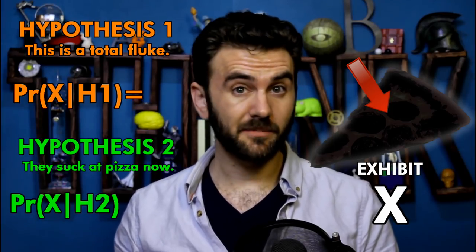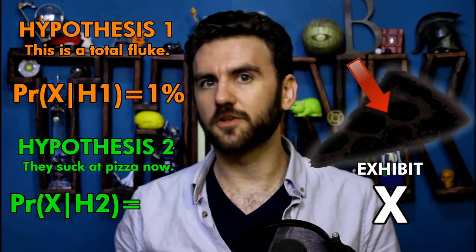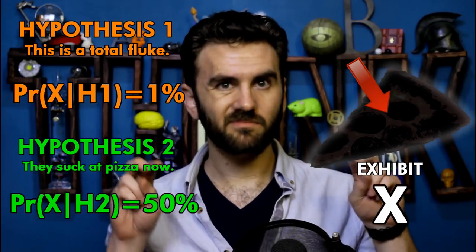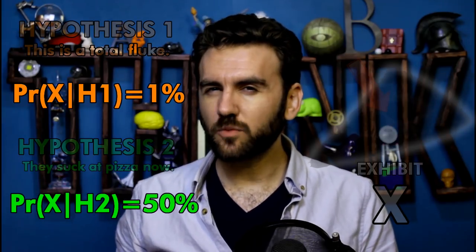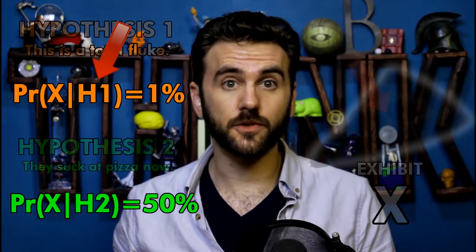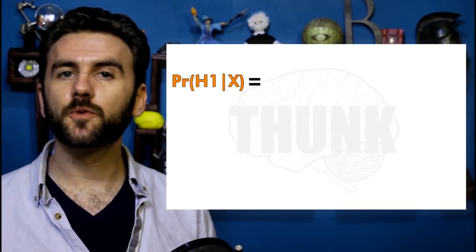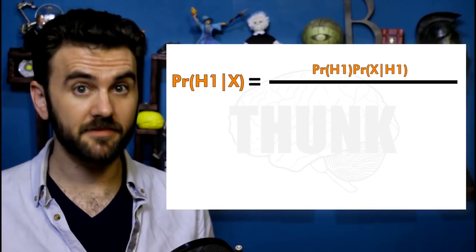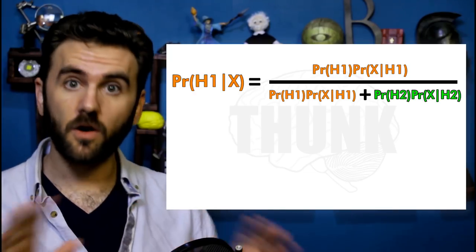If this place was actually amazing, this kind of mistake should only be a 1 in 100 thing. If they finally lost their best chef or something, it could be a 50-50 chance whether you're going to get a good meal or not. These are called conditional probabilities — basically, how likely would this observation be if this hypothesis were true? Finally, we're going to use Bayes' theorem. The new probability of a hypothesis being true is equal to the previous probability of the hypothesis times the conditional probability of the evidence given that hypothesis, divided by the sum of those values for all hypotheses.